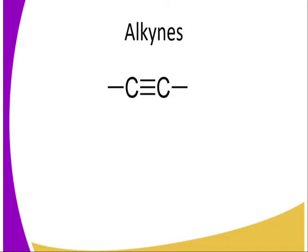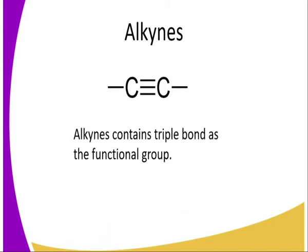We have introduced ourselves previously to organic chemistry where we talked about hydrocarbons — compounds made up of carbon and hydrogen only. But the bond between carbon atoms in alkynes is not a single bond, not a double bond. Alkynes have a triple bond, and the structure can be illustrated as shown in the diagram. Alkynes contain a triple bond which gives us the functional group.